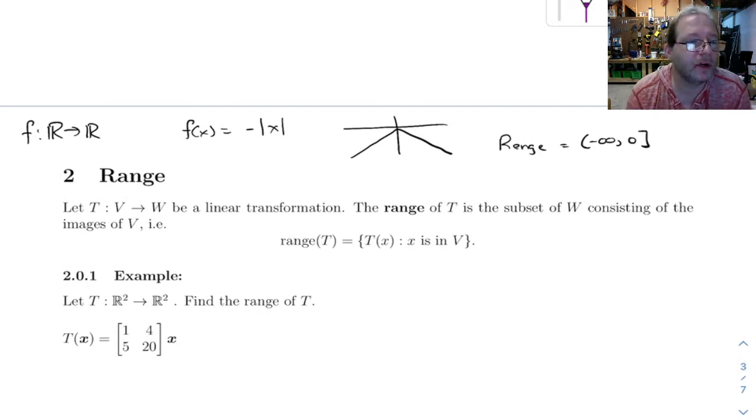So down here we're going to look at the same sort of idea, but we're going to do it for linear transformations. So let T be a linear transformation that maps V to W, and the range here is going to be the subset of W consisting of the images of V. The range here is just the negative numbers together with zero, a subset of R, the numbers that this function actually spits out.